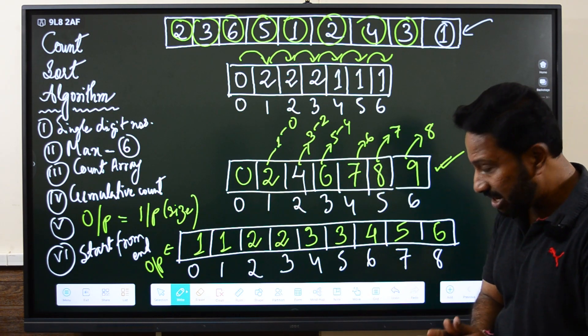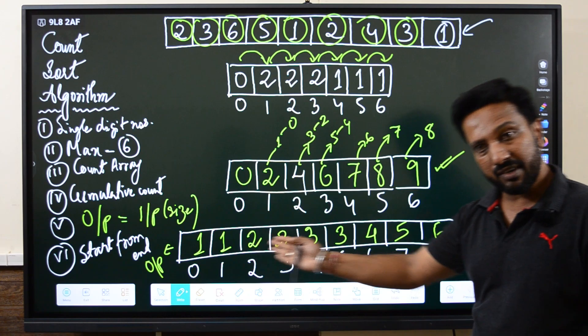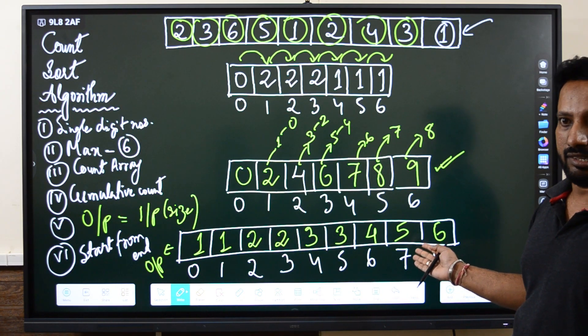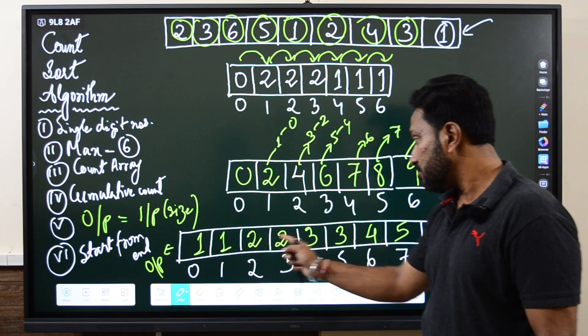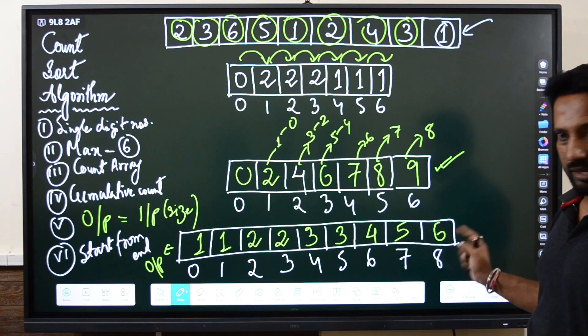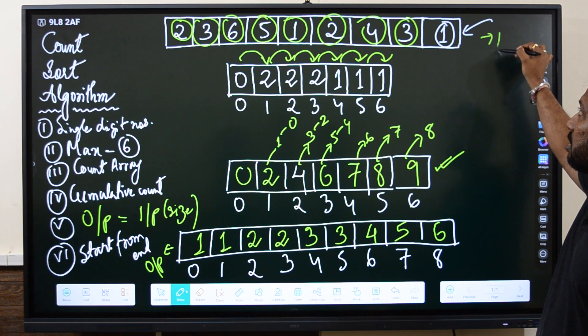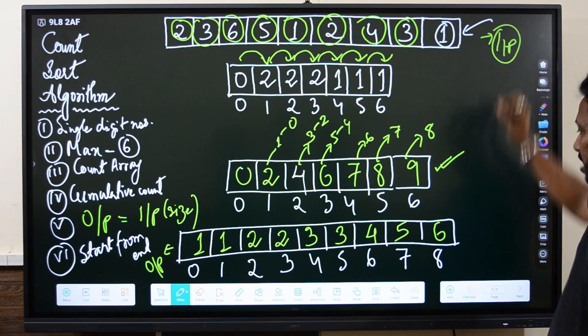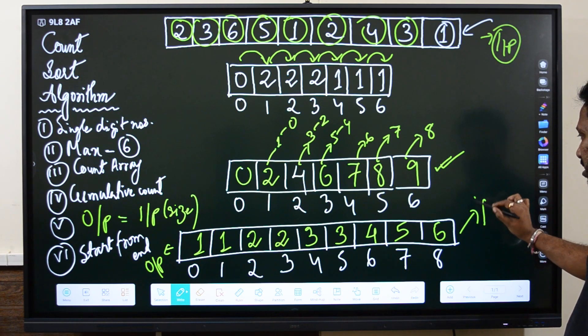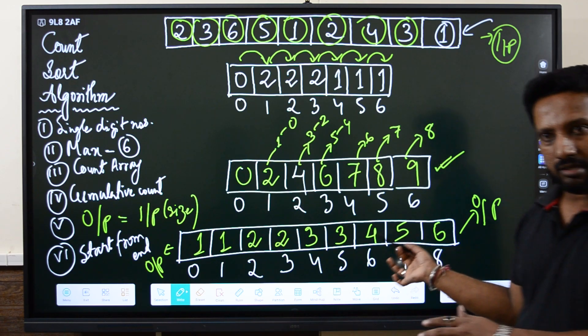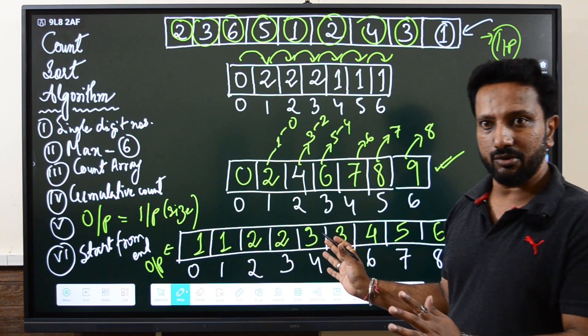Now if you see carefully this is actually our resultant sorted array in ascending order: one, one, two, two, three, three, four, five, six. This is the input array, and we have this as our output array. This is the solution. I hope you have understood the algorithm.